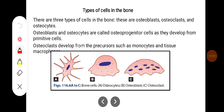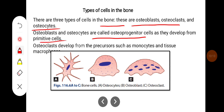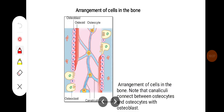Types of cells in the bone: there are 3 types of cells in the bone — osteoblasts, osteoclasts, and osteocytes. Osteoblasts and osteocytes are called osteoprogenitor cells and they develop from primitive cells. Osteoclasts develop from precursors such as monocytes and tissue macrophages. In the diagram, A represents osteocytes, B represents osteoblasts, and C represents osteoclasts. Note that the canaliculi connect osteocytes to osteocytes, and osteocytes to osteoblasts.